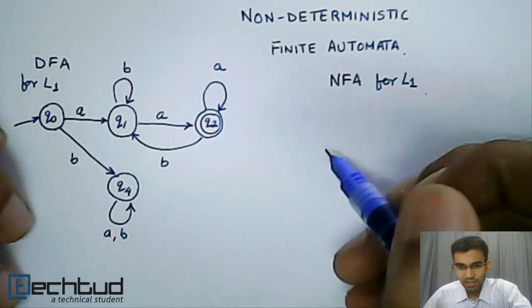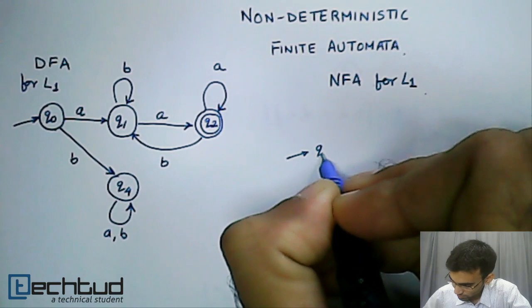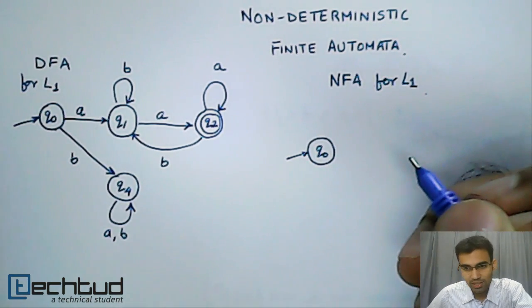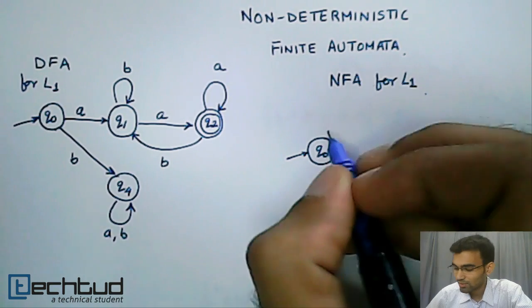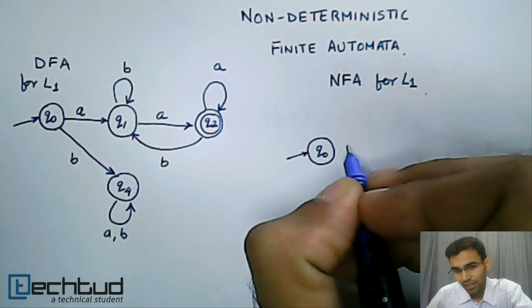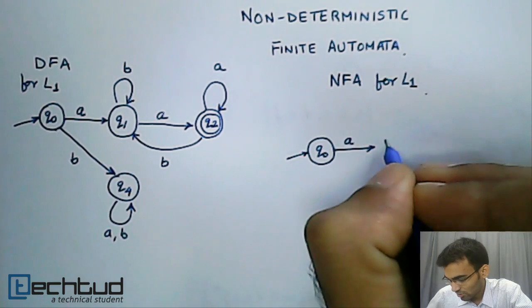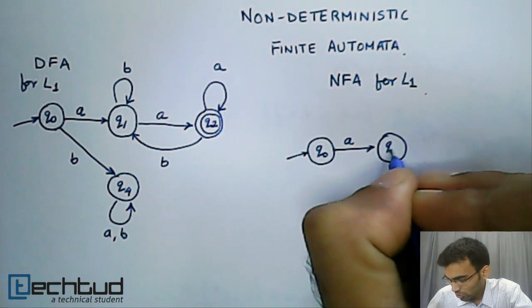For the NFA, we start with the initial state Q0 and we see what we need to expect. The first thing we expect is the first letter we start with has to be an A. So we have a transition on an A going to a different state.